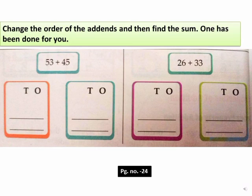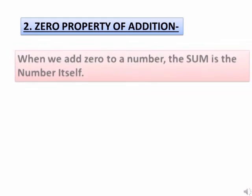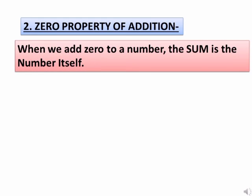You will do the next two questions given in your book on page number 24. The second property of addition is the zero property of addition. According to this property, when 0 is added to a number, the sum is the number itself.